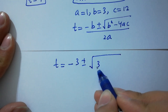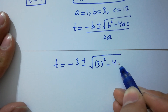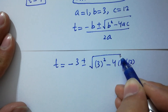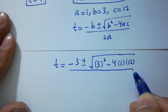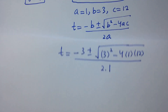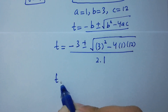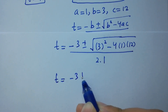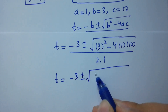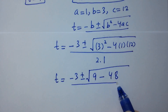b is 3, so b² is 9; 4 × a × c = 4 × 1 × 12 = 48; and 2a = 2 × 1 = 2. So t = (-3 ± √(9 - 48)) / 2.